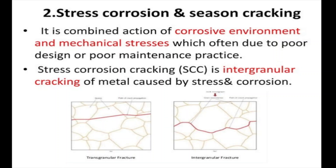Next is stress corrosion and season cracking. We are all very familiar with the phenomenon of season cracking. Stress corrosion we have seen but not properly noticed yet. Sometimes we find it in a particular metallic bar which is already stressed at a particular region, maybe at the middle or at one particular side. At that particular stressed region, corrosion will occur at the very beginning. Theoretically, it is a combined action of corrosive environment and mechanical stress, which makes it a very high energy region — relatively higher than the surroundings — often due to poor design or poor maintenance practice.